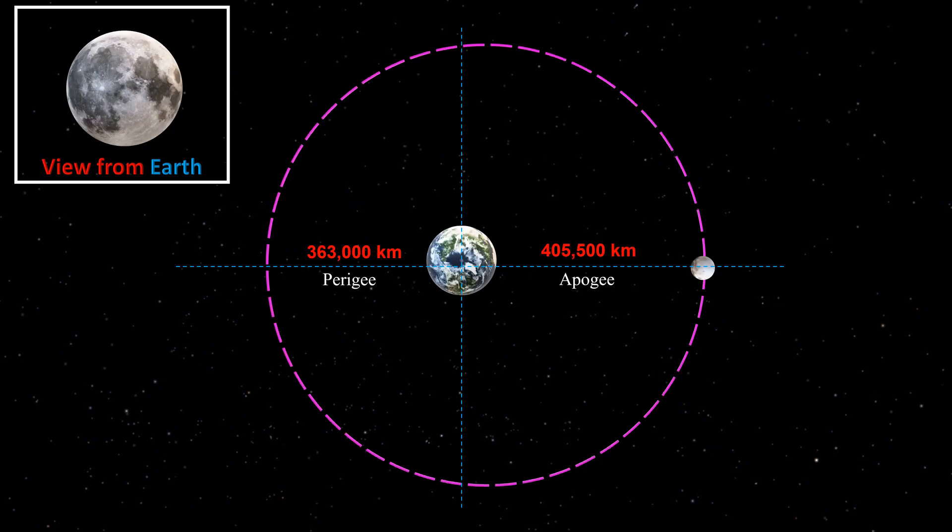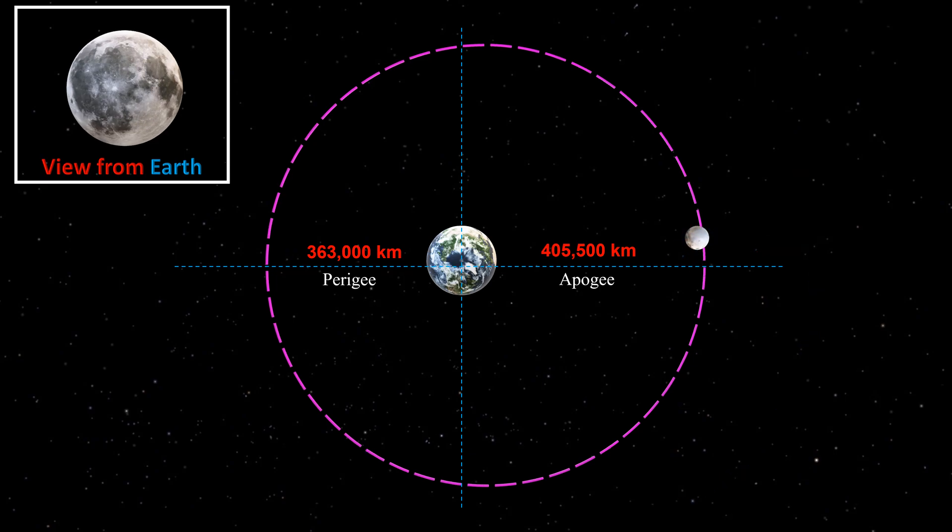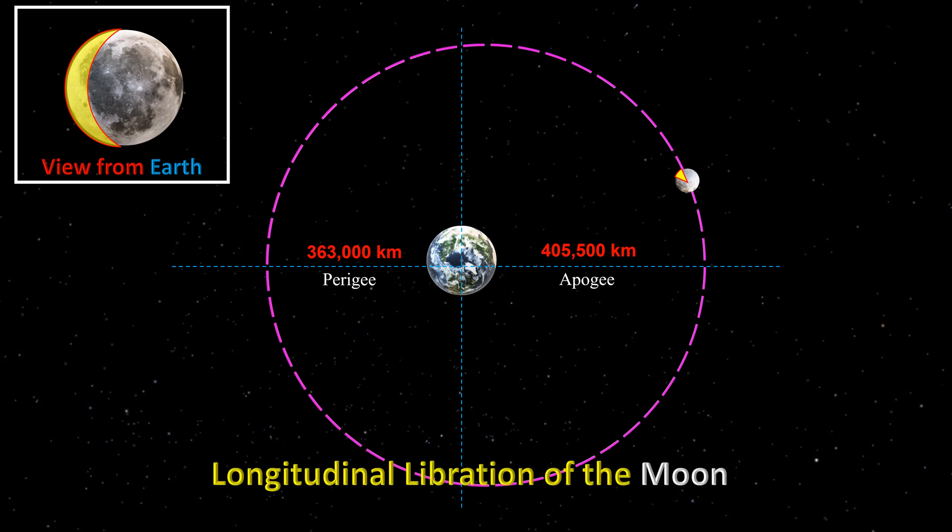When the moon passes apogee, its revolution speed reduces with respect to its speed of rotation, due to which we can see some of the eastern portions of the moon. This east-west wobbling is known as longitudinal libration of the moon.